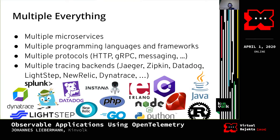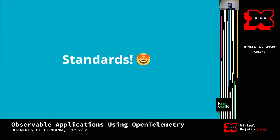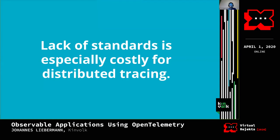Combine those challenges with the fact that we have multiple everything: multiple microservices possibly written in multiple languages, services communicating via HTTP, gRPC, and messaging, and multiple tracing backends — open source ones like Jaeger and Zipkin, and commercial ones like Datadog, New Relic, Lightstep, Dynatrace, AppDynamics, Stackdriver, and more. How do you make all this work together? Is there a solution to make tracing easy? I think the answer is standards.